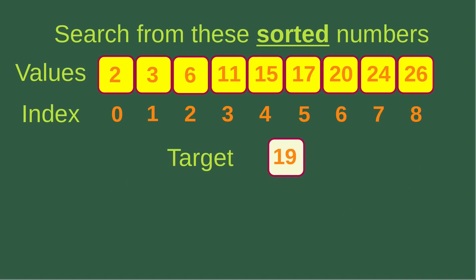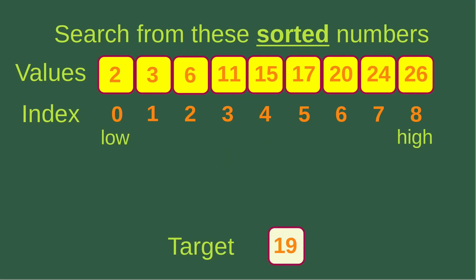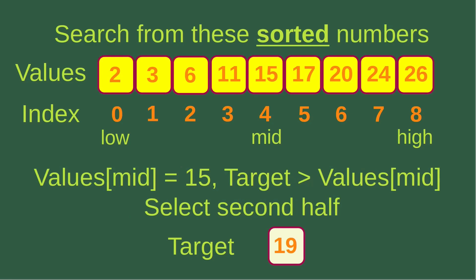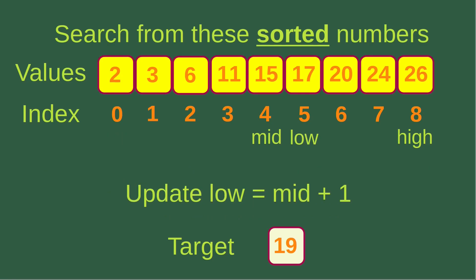Let us see another example. Suppose I want to find out 19 from these sorted numbers, and the indices of these values are already provided. The first step is to indicate the low index and the high index. Low is for the far left element and high is for the far right element, so low is zero and high is eight. Since low is smaller than or equal to high, we calculate mid as low plus high with integer division by two, giving mid equals four. We check that the mid-index corresponds to a value of 15. Since the target 19 is larger than 15, we handle the second half and update the low index to mid plus one. Mid is four, so low is five.